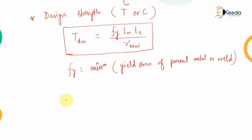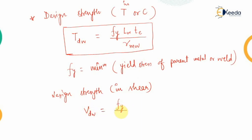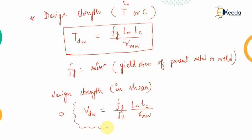If the applied load generates shear force, the design strength in shear VdW must also be calculated. It is given by: (Fy / √3) × (length of weld × throat thickness) / γMW. The √3 factor comes from the theory of failure — specifically the maximum shear stress theory — which states the design shear value equals the yield value divided by √3. This gives the design strength of the butt weld in shear.